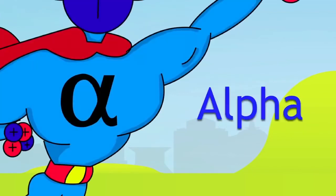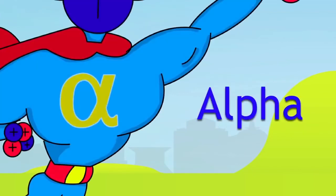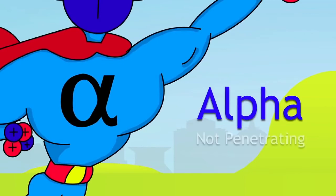The symbol for alpha is this, the Greek letter alpha. It's not very penetrating. That means if it actually hits something, it stops. Penetrating tells you how far it can get through things.